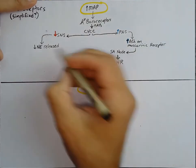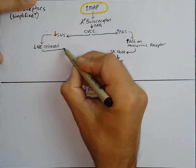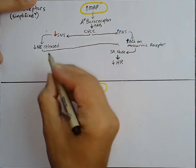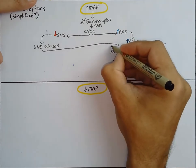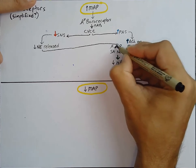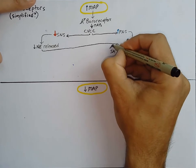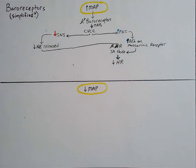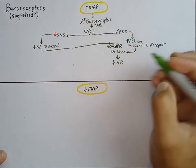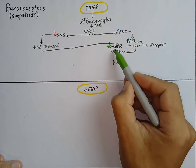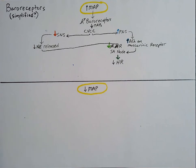This decrease in norepinephrine is going to go and end up acting on the SA node. What receptor do we find on the SA node for norepinephrine? We find beta-1 adrenergic receptors. So what's going to happen as we decrease norepinephrine? We're going to decrease the activation of the beta-1 adrenergic, which is perfect because that fits right into that decreased heart rate. We are no longer increasing the depolarization — now we're allowing a slower rate of depolarization and hyperpolarization for that matter.